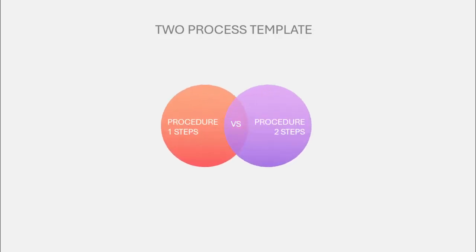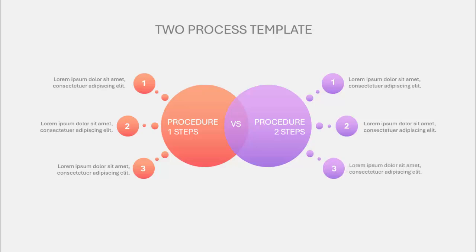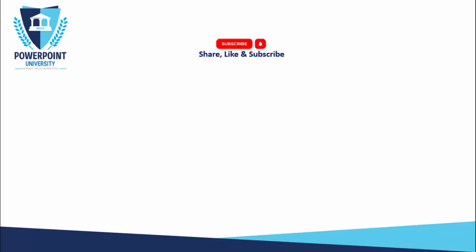In today's tutorial I'm going to show you how to create a two-process template slide in PowerPoint. When I click it will show the procedure one steps versus procedure two steps. Procedure one has step one, step two, and step three, and when I click, procedure two steps will come — step one, step two, and step three. Depending on the requirement you can increase or decrease these options.